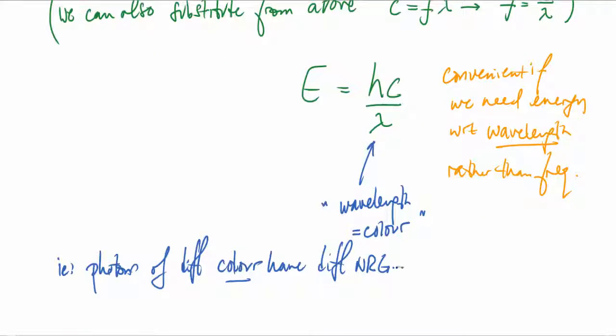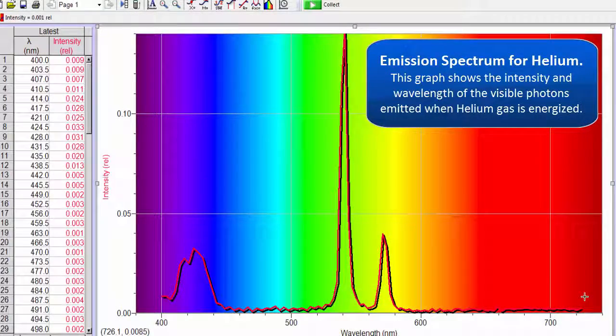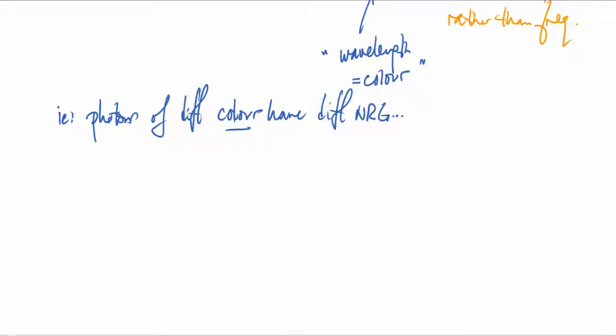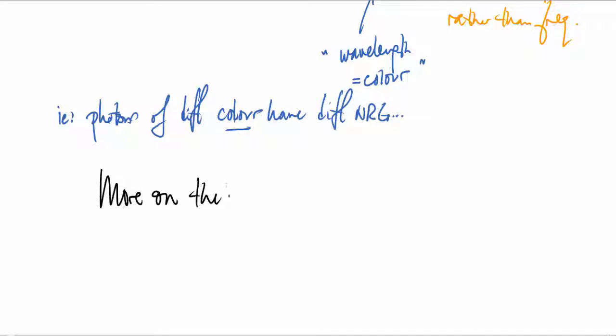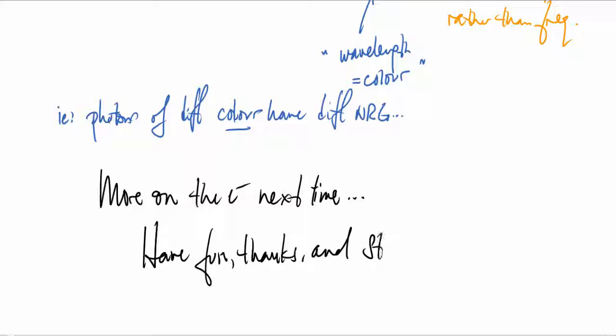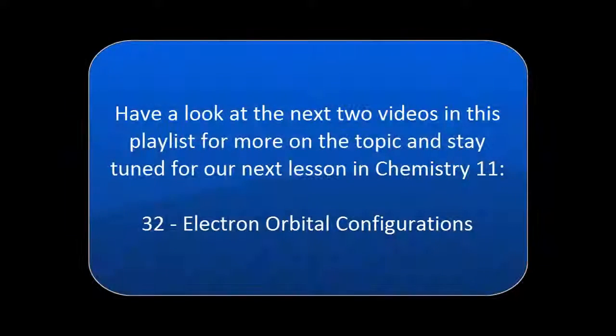Let's have a look at the photon emission spectrum for helium. You can see there's a couple of photons coming with blue and purple, one red, one green, and so on. We'll get into a little bit more about the electrons next time. Do stay tuned for why and how this works. Thanks and stay tuned. Have a look at the next two videos in this playlist for more on the topic, and watch video number 32 on electron orbital configuration.